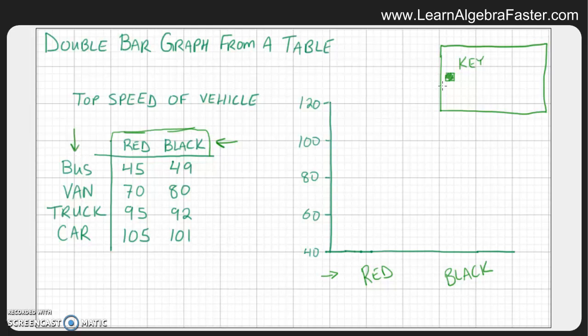Last time we looked at the types of vehicle. So the bus, the van, the truck and the car. So in this case, if you do it in reverse and you put the colors of the vehicle down here, then you have to put the types of vehicles in the key. And so in this case, we will use the green color for buses.